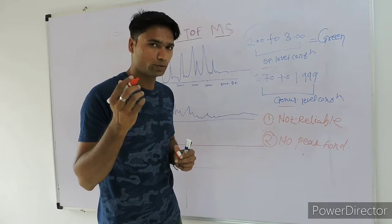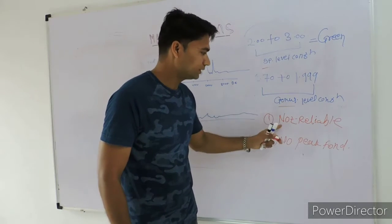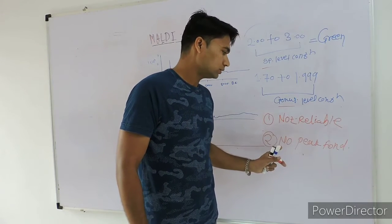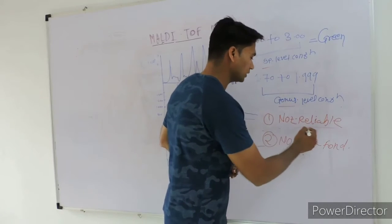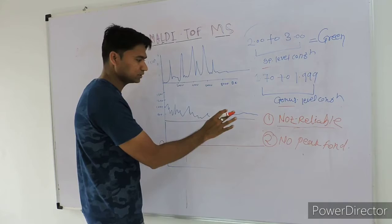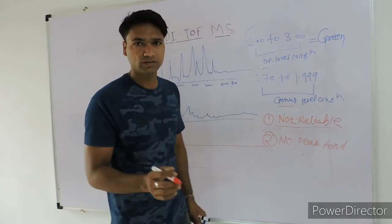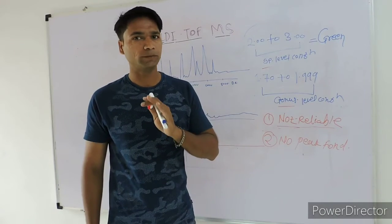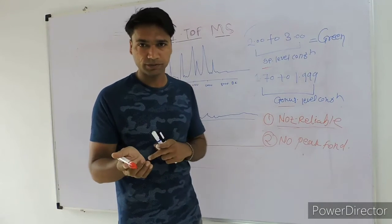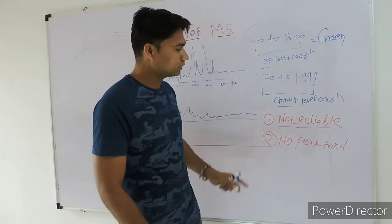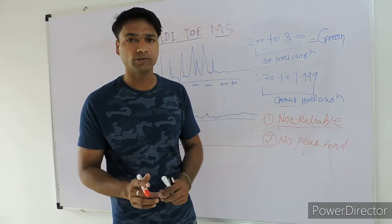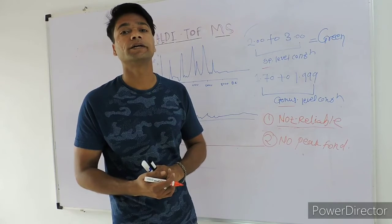Whenever you have the result and you see the red color, it is either non-reliable identification or no peak found. There are two probabilities. One is that the spectra doesn't match properly — that's the reason MALDI-TOF MS is not able to identify up to the genus or species level. But what happens whenever your spectra is good? Sometimes it happens that the spectra is good, still you don't get a reliable identification. Why does this happen? It is a limitation — it is nothing but a database limitation.